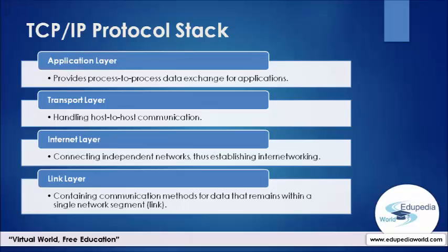The next layer is the internet layer, which connects independent networks and manages data addressing and delivery between networks. The third layer is the transport layer, which handles host-to-host communication, manages the transfer of data, and assures that received and transmitted data are identical.